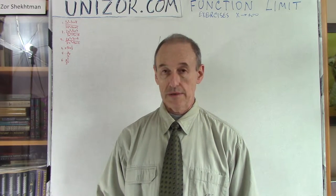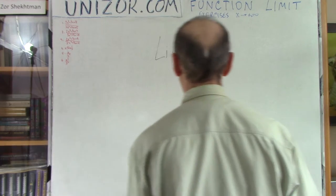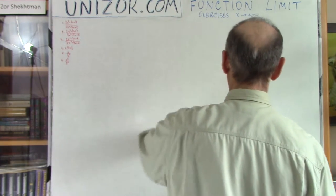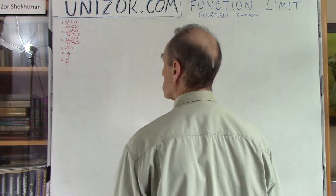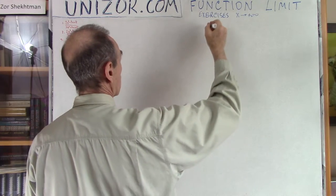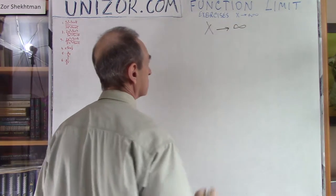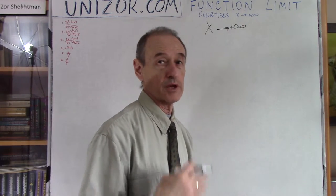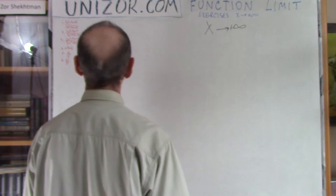So, exercises. I have six different problems, and let me go one by one — a couple of easy ones, a couple of more difficult. The first one: we are talking about x going to infinity — obviously positive infinity. If I don't mention positive or negative, positive is assumed.